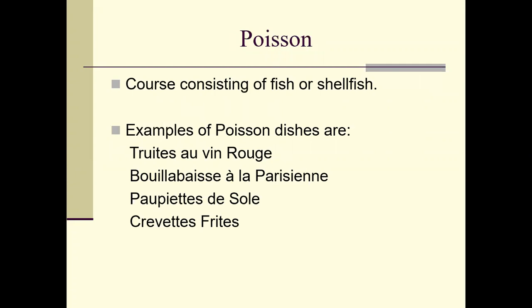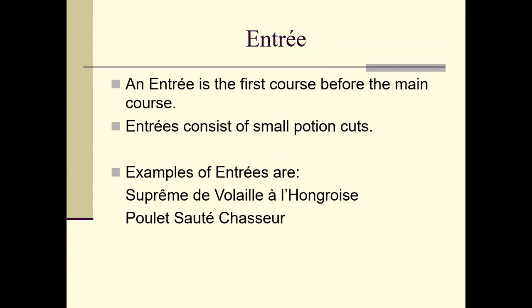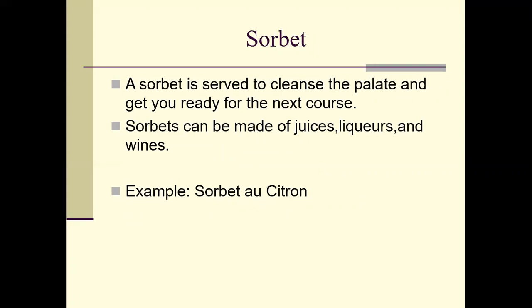The poisson course consists of your fish and shellfish. Examples of poisson dishes are fruits de mer, bouillabaisse, paupiettes de sole, and crevettes frites. Your entrée is the first course before the main course and consists of small portion cuts — it could be a chicken breast, a leg, a thigh, or a pork chop. Examples include suprême de volaille and sauté chasseur.